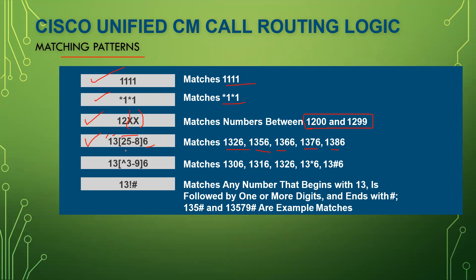To be clear on the [258] pattern: it matches 1326, 1356, and 1386, but it will not match 1396, 1316, or 1306 — those are excluded.